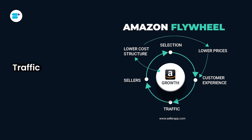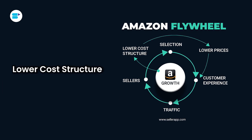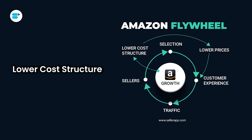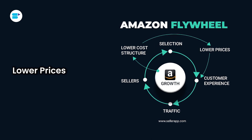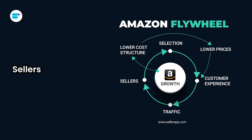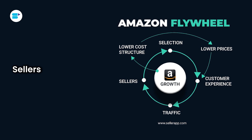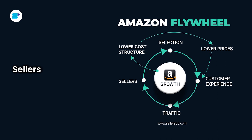These three pillars further help optimize the other components of the Amazon flywheel: lower cost structure — by selling products online, Amazon does not incur the costs of running physical brick-and-mortar shops, allowing a more scalable and cheaper business model. Next is lower prices — Amazon's founder believes customers always want lower prices, making it one of the more fundamental tenets of the company's philosophy. And finally, sellers — the many third-party sellers who use the Amazon platform are a critical part of the flywheel because they provide the selection of products customers are looking for.